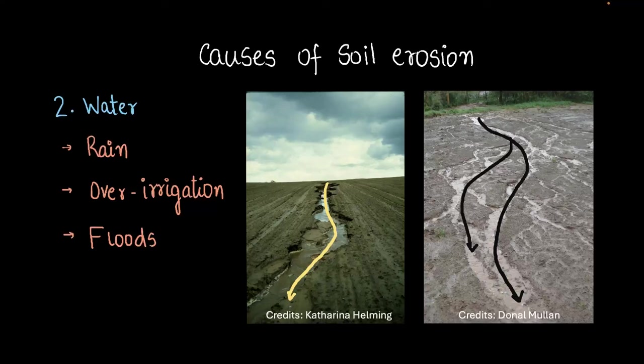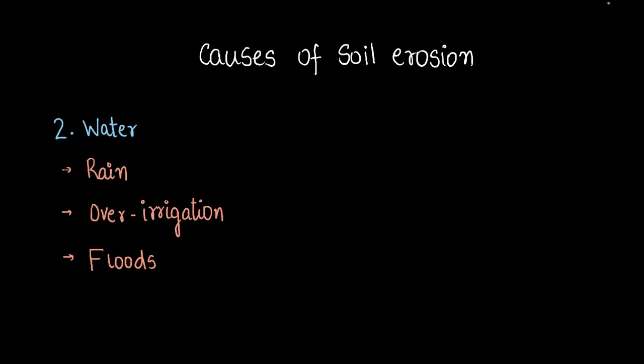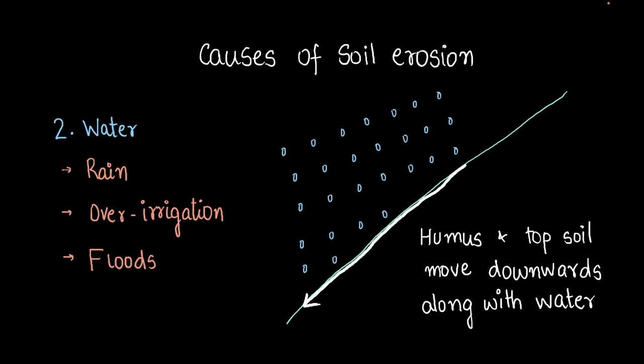Now we did mention rain, over-irrigation, and floods. There's another scenario where we have a slope and let's see what happens on a slope. If we have a sloping piece of land maybe on the side of a mountain and it begins raining. It rains and rains and rains, and then don't you think the humus and the topsoil would start moving downwards along with the rain? Right? And that does happen. So that causes soil erosion as well.